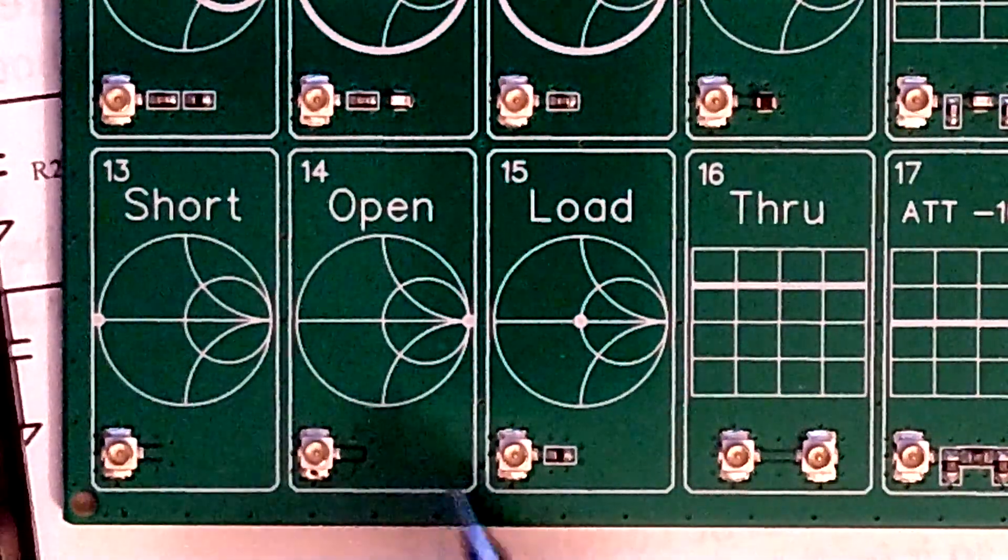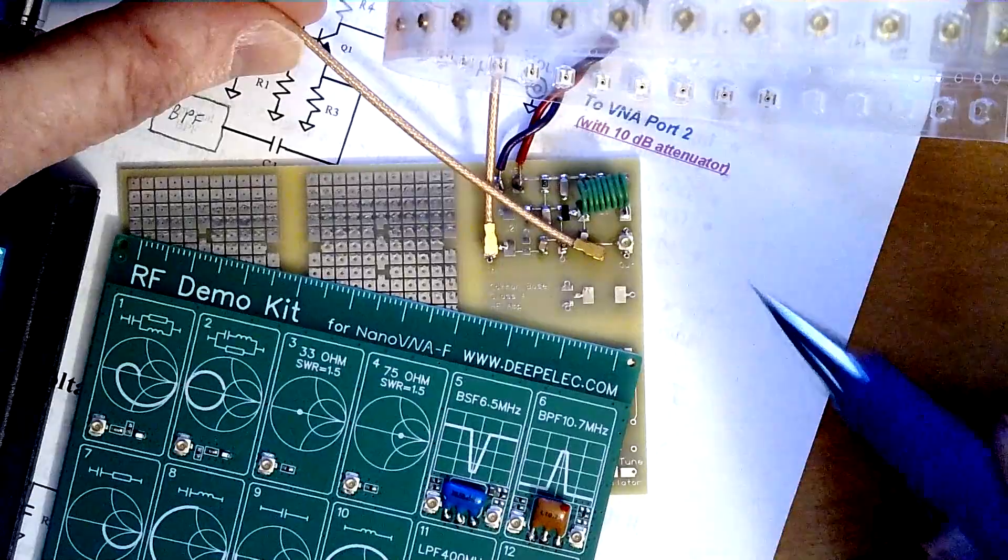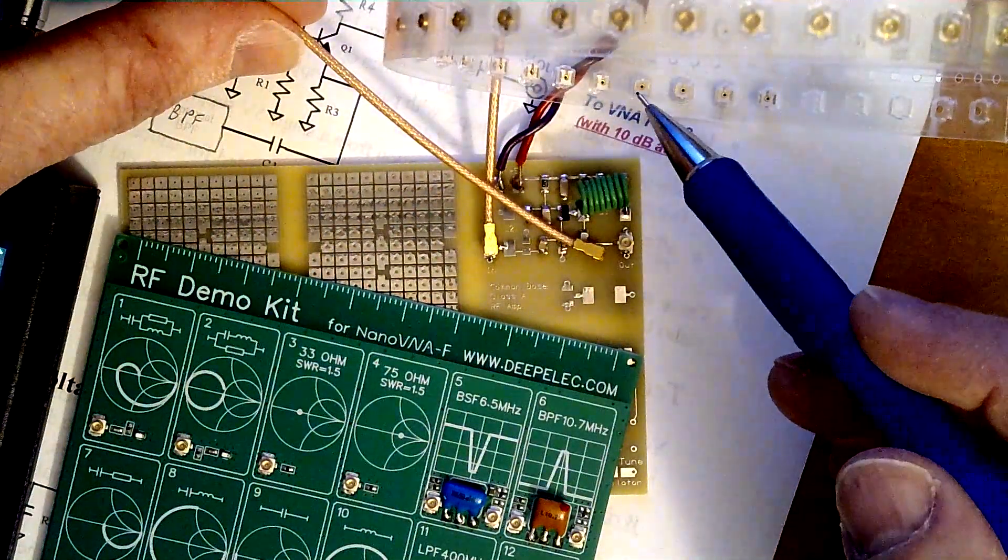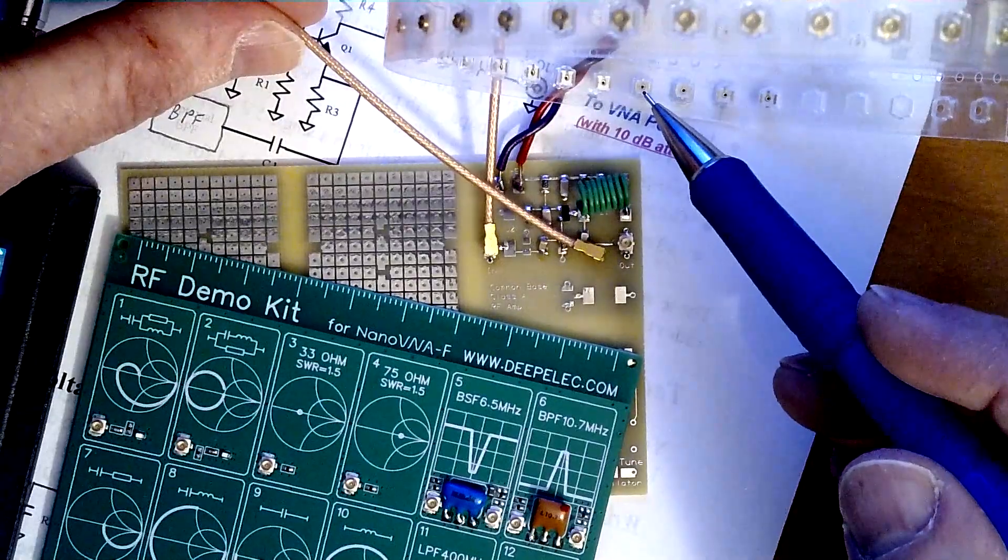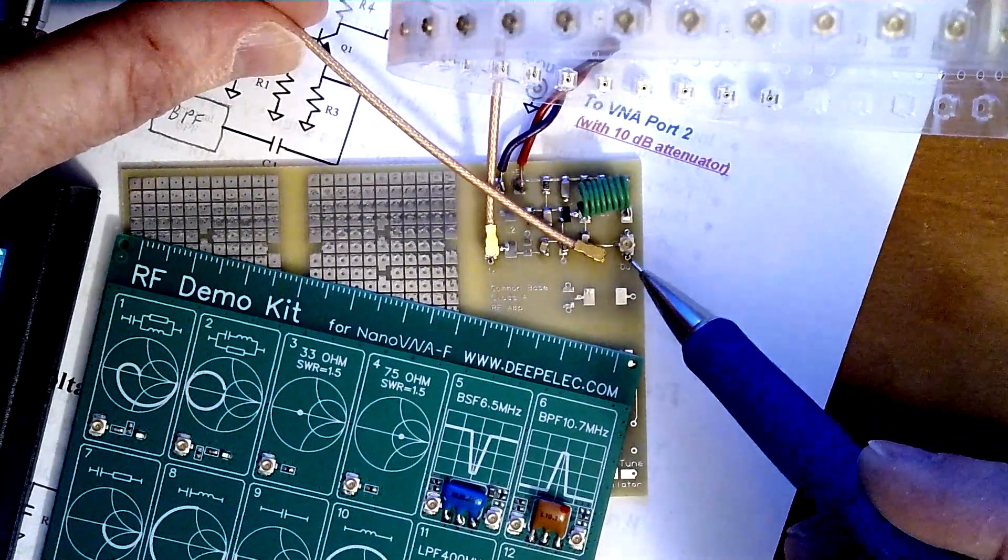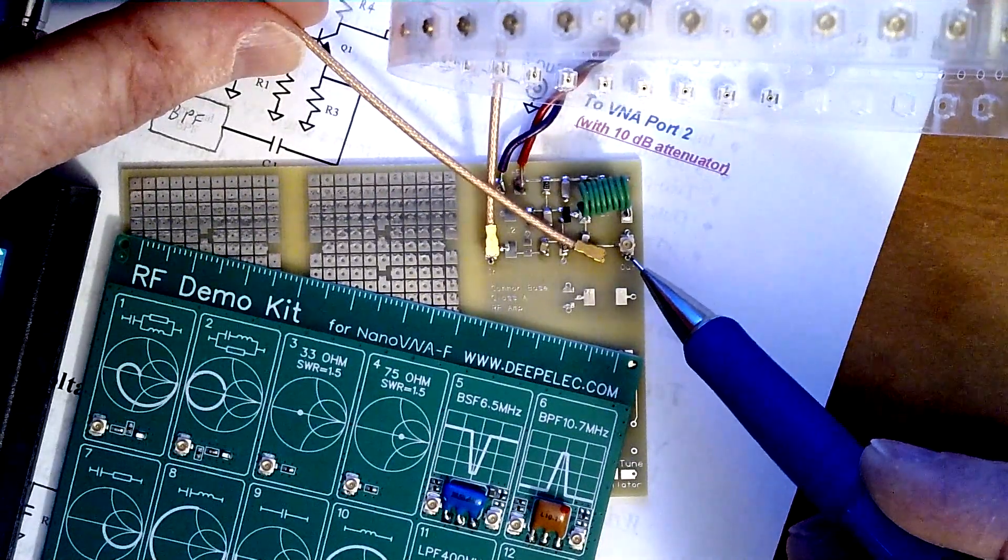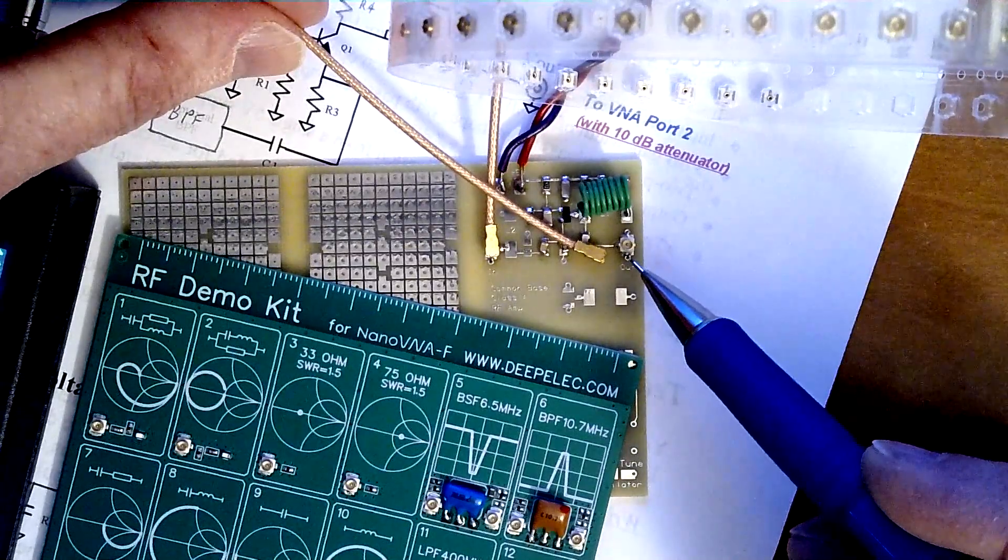The mating connectors are shown here on the board. This is for the short, and the open, and the load, and you can get these for pretty cheap. I bought 50 of them for about seven or eight dollars on Amazon, and I use them on the little test amplifier board that we designed and built to do this video.